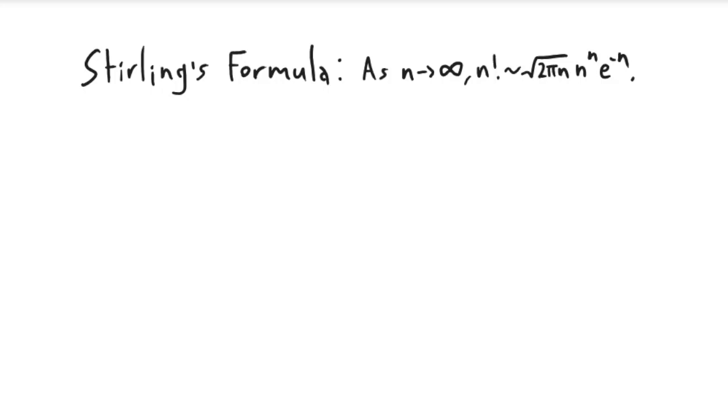Okay, so in this series of videos I want to prove Stirling's formula, which is an asymptotic formula for the factorial. What Stirling's formula basically says is that n factorial is asymptotic to this expression.